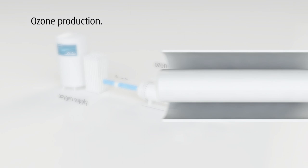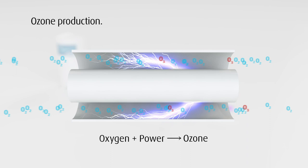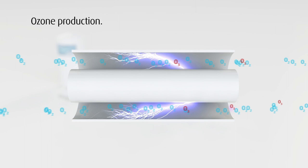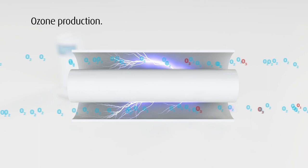Ozone is created from oxygen in an ozone generator. When power is applied to gaseous oxygen, some molecules split and then recombine to form ozone. During this process, however, only a small part of the oxygen is actually converted to ozone.